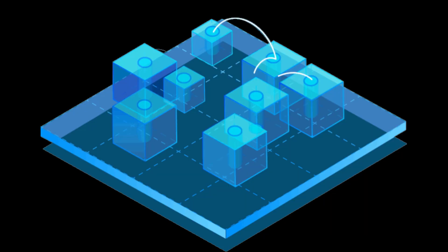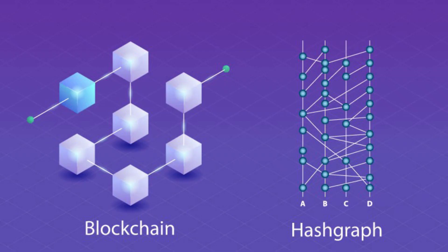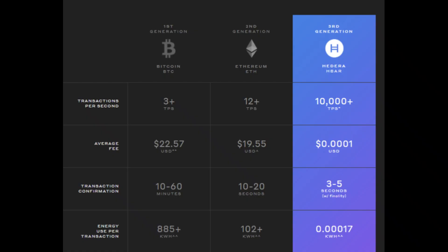Gossip protocol is just like what you're thinking — it's like middle school gossip. One node tells another node what the other node said, and it spreads all over the place. Here's an example of hashgraph and blockchain side by side — you can see block by block for blockchain, compared to hashgraph where all the information flows at the same time. Fixed fee and also a lot faster.